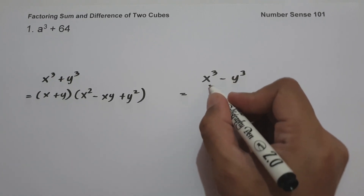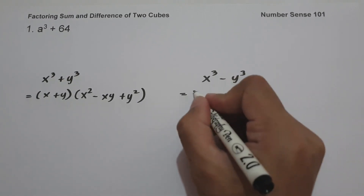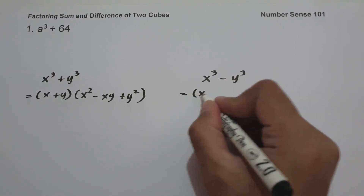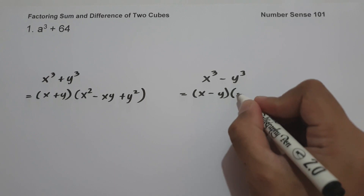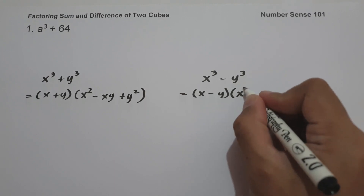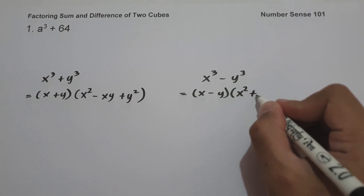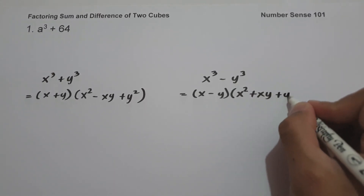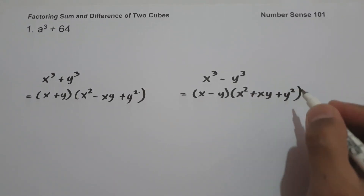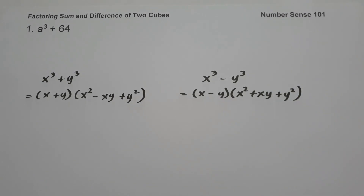The other one is the difference of two cubes, and that is x³ − y³. The factored form of x³ − y³ is (x − y) times the quantity x² + xy + y², where x and y are real numbers. Those are the different forms that you need to remember.